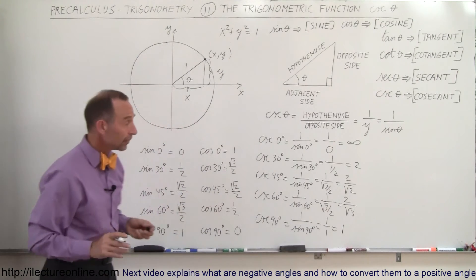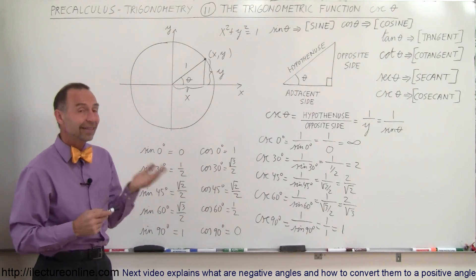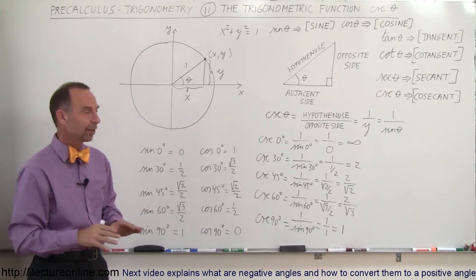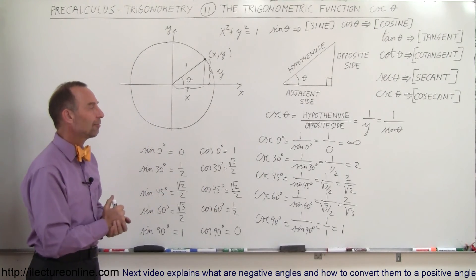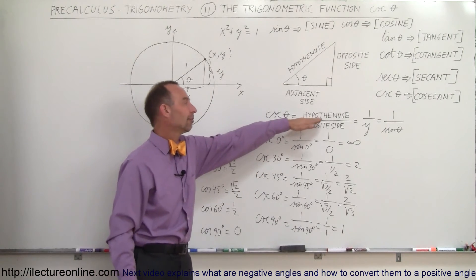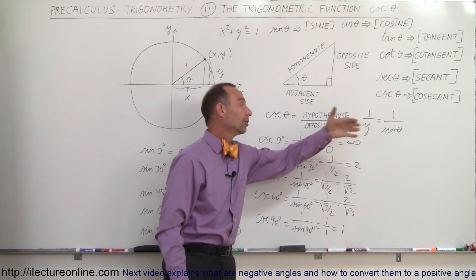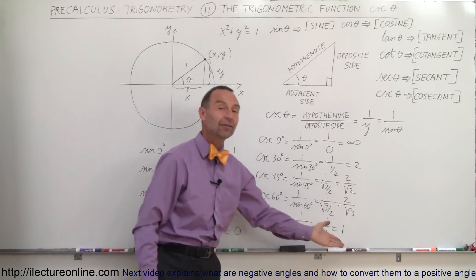So you can see that just like the secant, the cosecant varies from values of infinity down to one, but not less than one. Again, that's because of the definition: the hypotenuse can never be less than one, so when y takes on its maximum value, the smallest value cosecant can have is one.